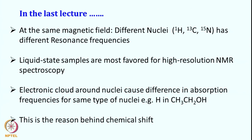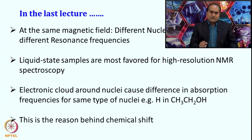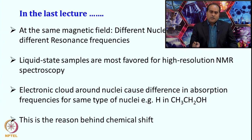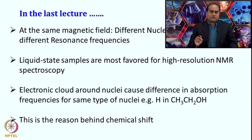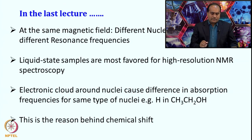We also looked at how liquid state samples are most favored for high resolution spectra because liquid samples can tumble in solution. Because of this tumbling, lots of motional averaging happens and many of the isotropic interactions are averaged out, giving sharp lines. Solids generally give broad lines, and gaseous samples have fewer spins to contribute to the signal, so their intensity is less. Therefore, for high resolution NMR spectra, liquid state samples are the most favored.